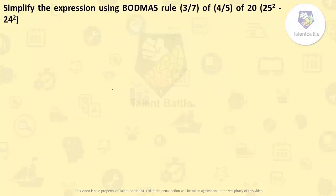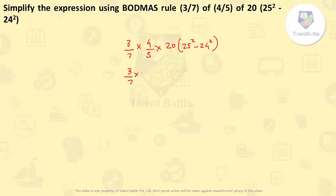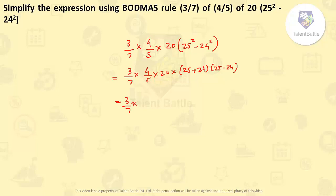This problem uses BODMAS to solve: 3/7 of 4/5 of 20 × (25² − 24²). First solve the bracket: 25² − 24² = (25+24)(25−24) = 49 × 1 = 49. Then: 3/7 × 4/5 × 20 × 49 × 1. The 7 cancels with 49 to give 7; the 5 cancels with 20 to give 4. Result: 3 × 4 × 4 × 7... simplifying gives 336.